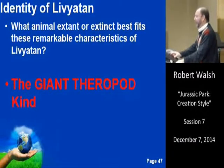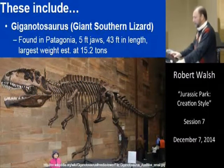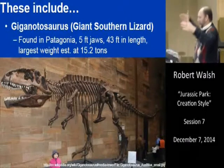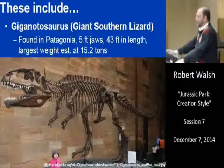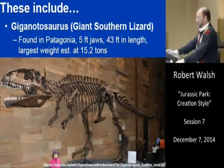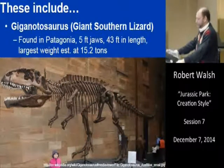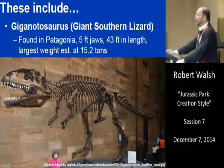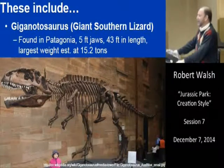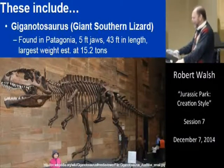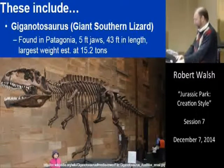Let's look at Giganotosaurus — the great southern lizard, found in South America and Patagonia. His jaws are five feet in length, he's 40 feet long, and roughly 30,000 pounds. Could you imagine him coming at you with those teeth, seeing him smile? Next is Tarbosaurus — the alarming lizard from Mongolia — also with five-foot jaws, slightly under 39 feet in length, with the largest weight just over five tons. Notice how wide he can open his mouth.